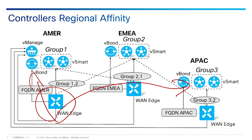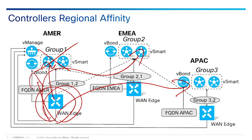The vSmart controllers are placed into regional groups, and these groups are configured on every vEdge. In principle, every vEdge should be configured to know about all vSmart groups. Then with the system controller group list command, you configure affinity by selecting group numbers in the preferred order. Edges from one region will normally connect to only the vSmart controllers in their own region, but will fail over to vSmart controllers in less preferred regions if necessary. So a vEdge would connect to local vSmarts first, but if that data center goes down, it would go over to a secondary preference, then a tertiary.